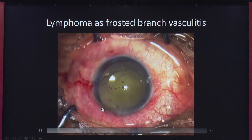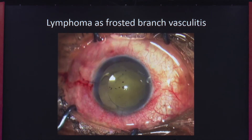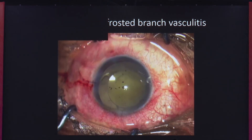This is a rare patient of lymphoma presenting as frosted branch angiitis. The patient was bilaterally blind with a lot of vitreous exudation. Post vitrectomy, we found that all the vessels were infiltrated with lymphoma cells, presenting like a frosted branch angiitis.